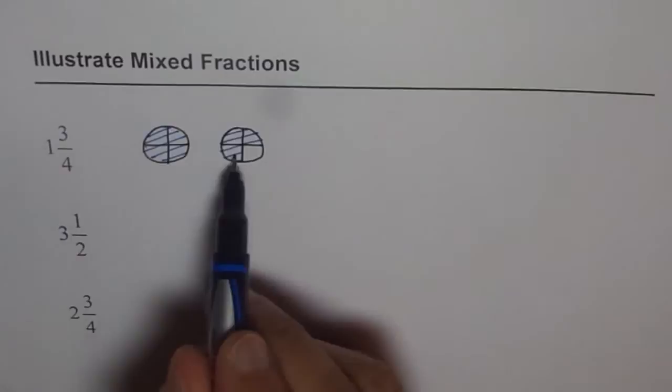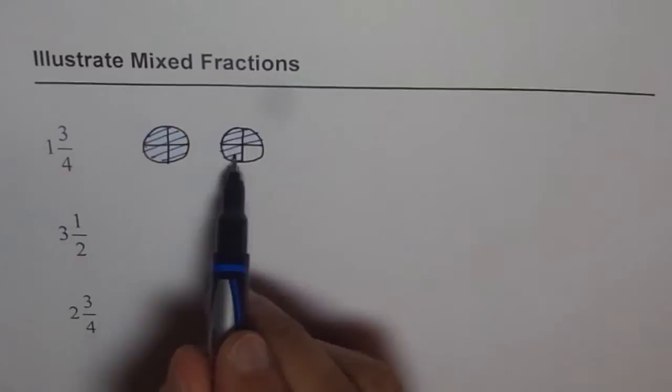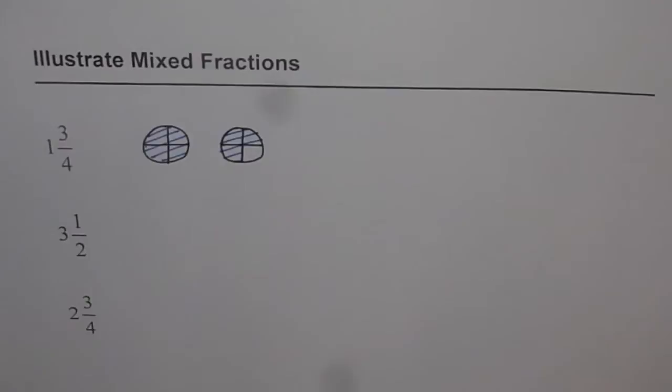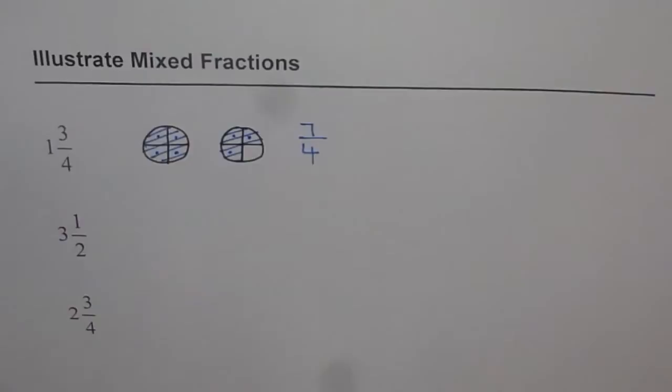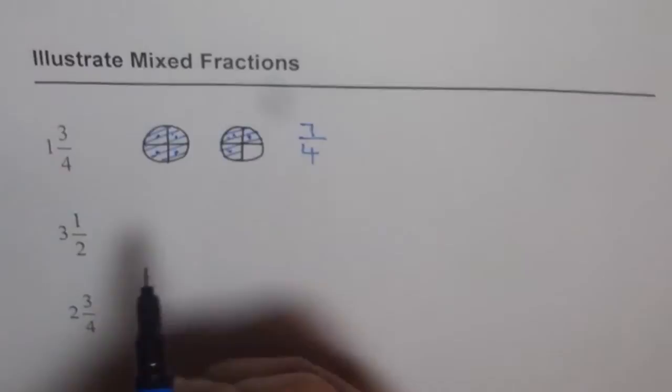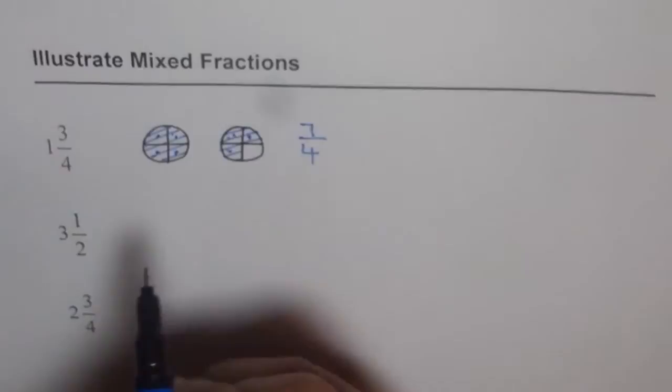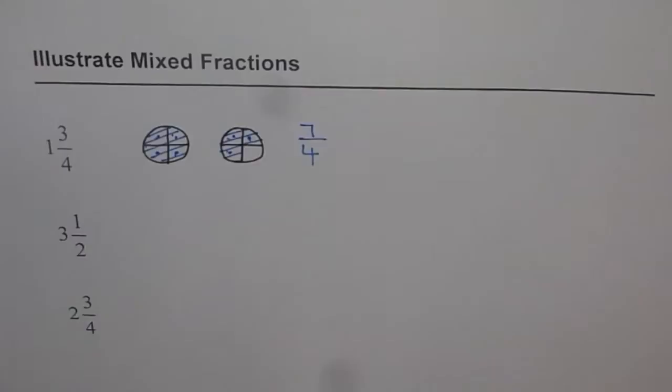If I have to write this as improper fraction, how can I write? Let us think like this. This is 1/4, 2/4, 3/4, 4/4, 5/4, 6/4, 7/4. I can write this as 7/4. Does it make sense? I think it does. 1, 2, 3, 4, 5, 6, 7. Yes, 7/4. So you can write mixed fractions as improper fractions, correct?